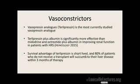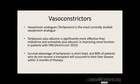While waiting for a liver transplant, you can put them on vasoconstrictors. Terlipressin is a vasopressin analog studied mostly in Europe — giving albumin and terlipressin together appears better than the octreotide, albumin, and midodrine combination used in the US. Vasoconstrictors don't improve mortality though — they're just a short-term solution. The long-term solution is liver transplant.